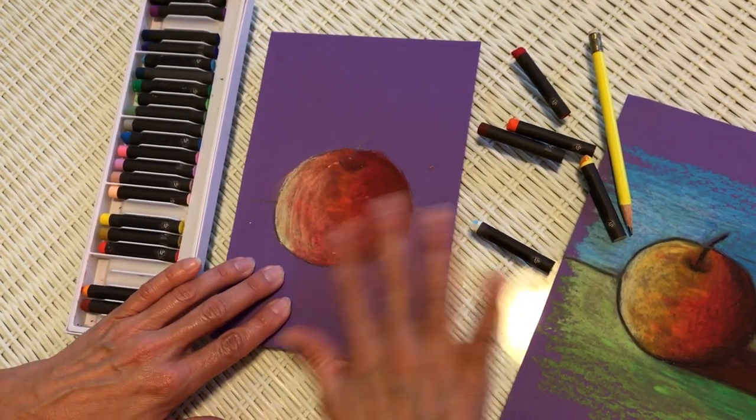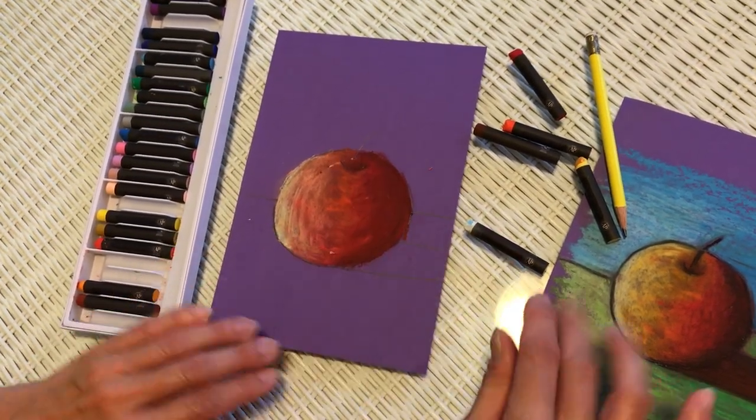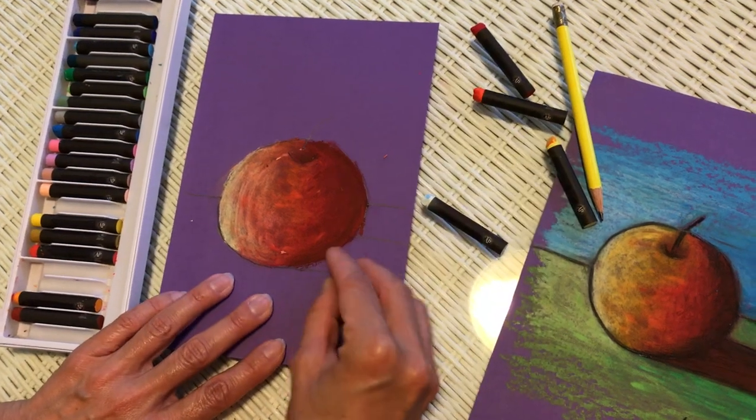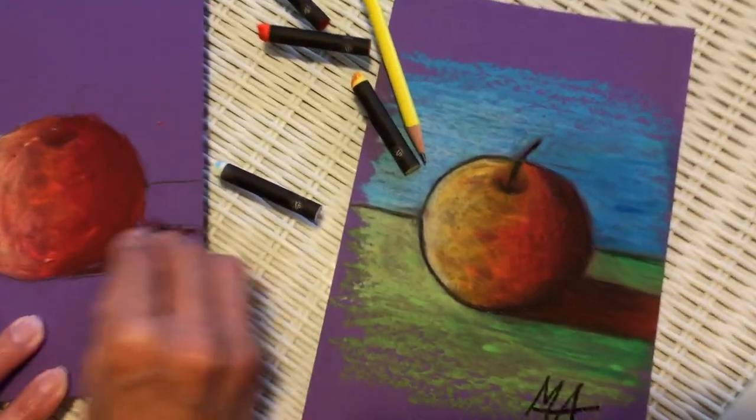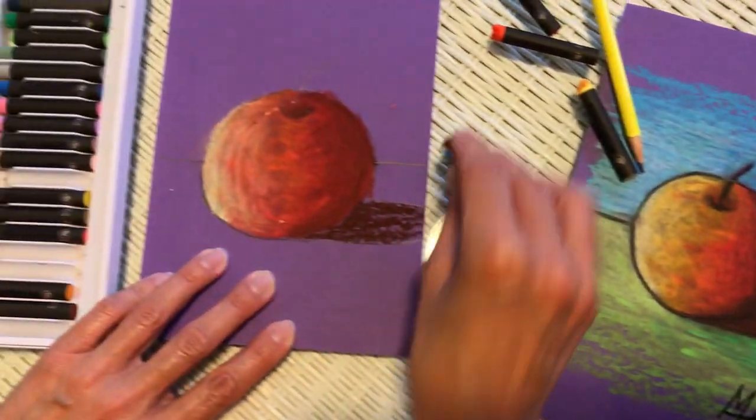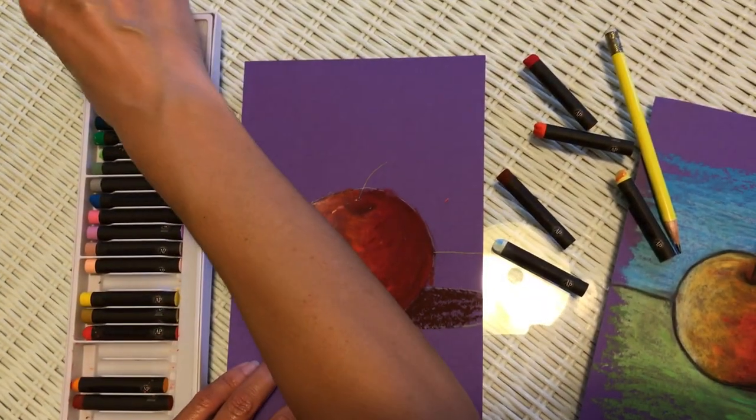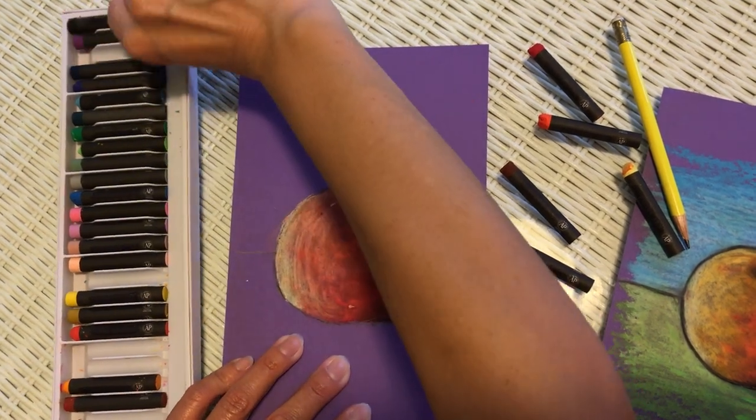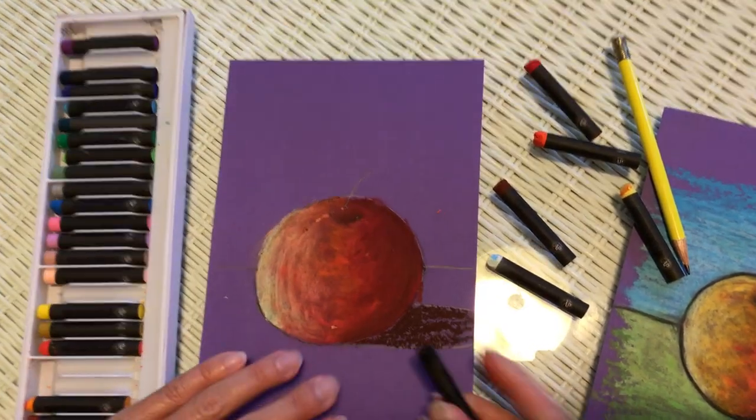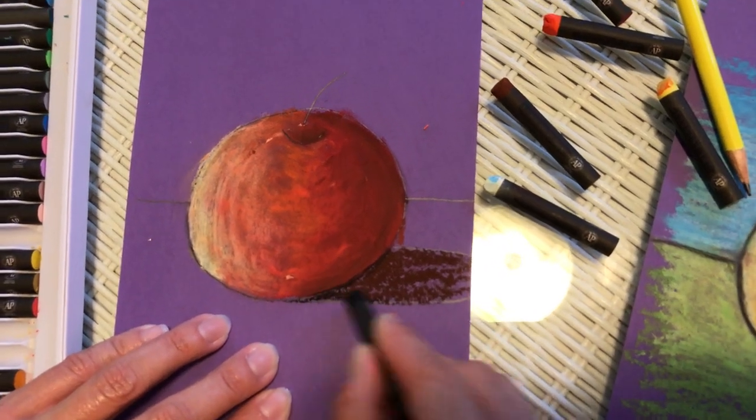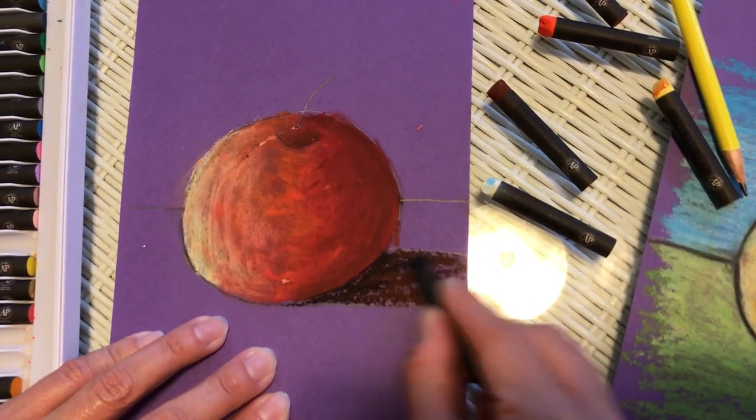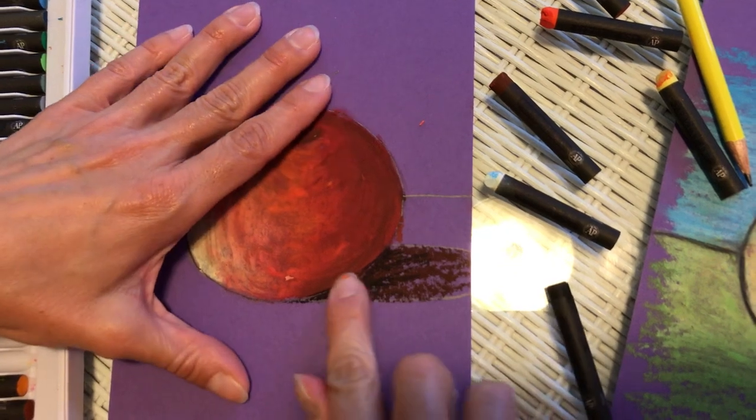Now I'm going to start working on the shadow. I can use brown. Maybe a little bit of black too. Got to be careful with black. Because black is a very powerful color. We want to add just a little bit and see how it affects the picture. Starting right here where the object touches the table. Again blending.